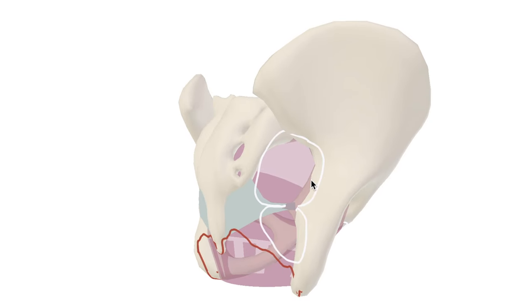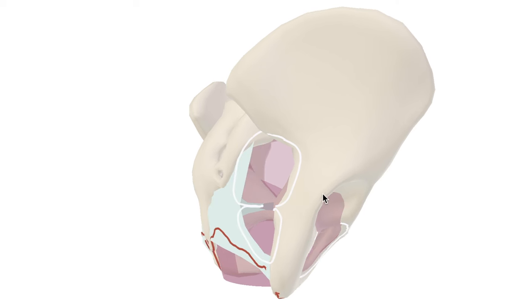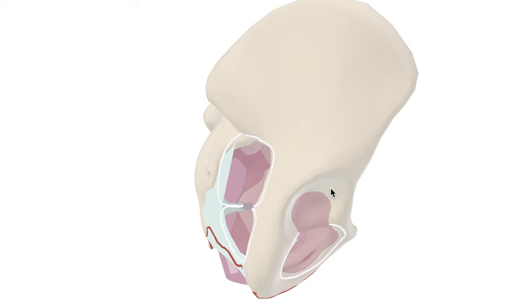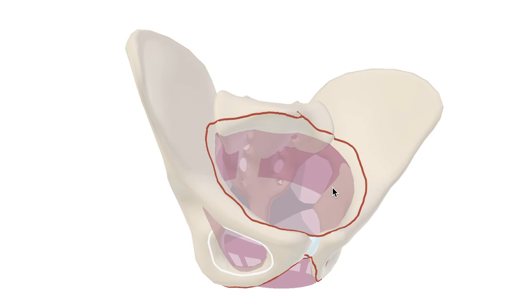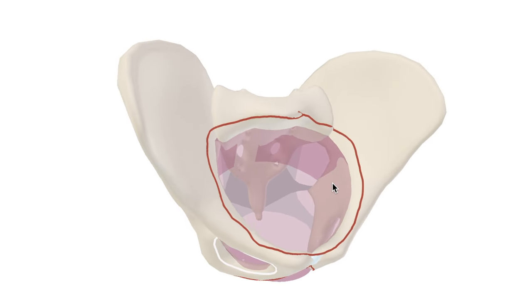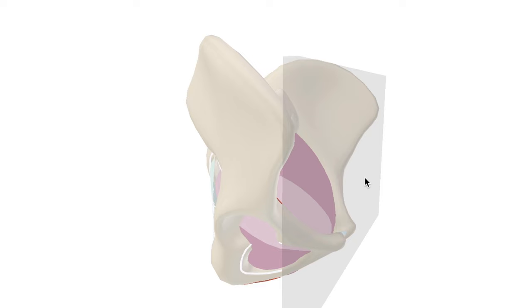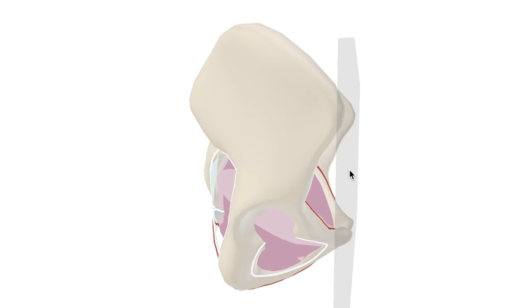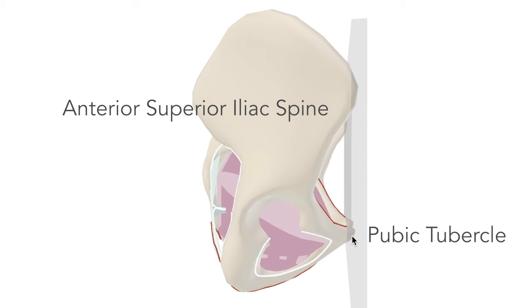Taking a step back, it becomes clear how important orientation is when it comes to anatomy. You've got to be able to reason through the arrangement and relationships between nearby structures in your head — to imagine how it all fits in life. One important thing to note, and something this model shows us in 3D, is the relationship of the pelvis to the coronal plane. The ASIS, or anterior superior iliac spine, and the pubic tubercles line up with it precisely.